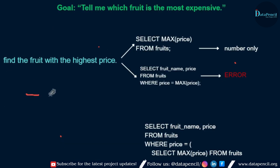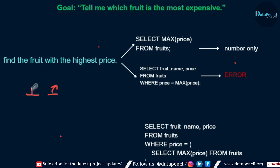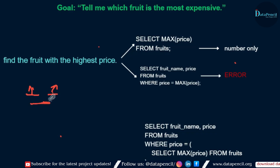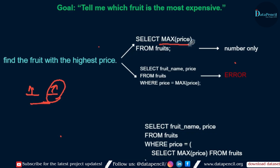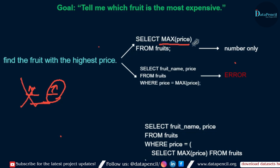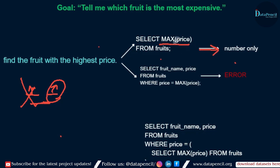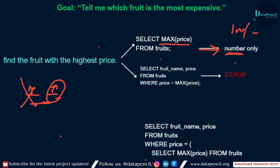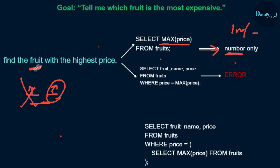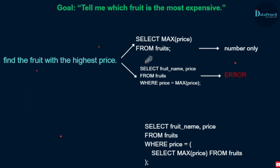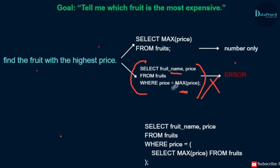We definitely cannot use two columns if one is with the aggregate function and another is left as-is. What if we only take the MAX price and leave out fruit_name? We can write: SELECT MAX(price) FROM fruits — the output will be a number only, like 100 or 200 rupees. We're still not getting the fruit name. What if we write: SELECT fruit_name, price WHERE price = MAX(price)? No, that will also throw an error because you cannot use an aggregate function directly in a WHERE clause.